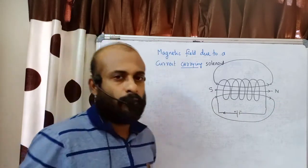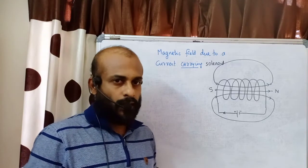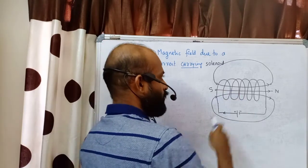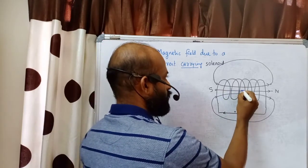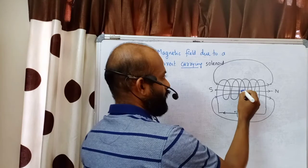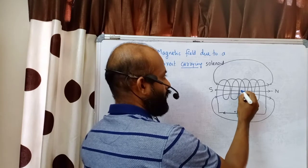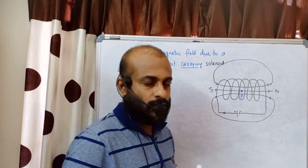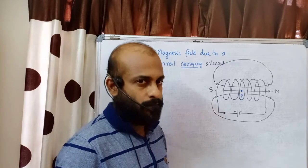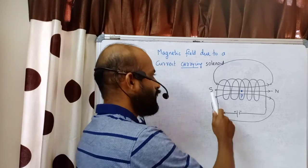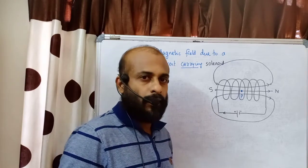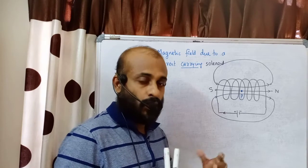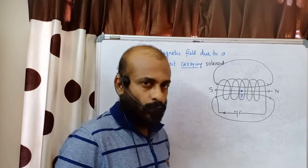Our aim is to find the magnetic field due to the solenoid at a particular point. We choose a point P within the solenoid and need to evaluate the strength of the magnetic field there. To do this, we will apply Ampere's law, which requires a closed path called an Ampere loop.